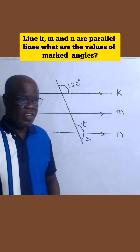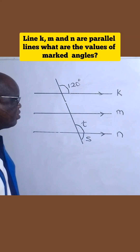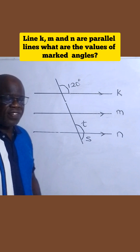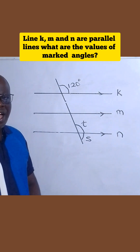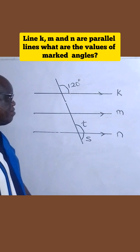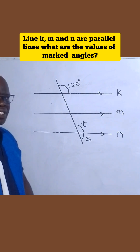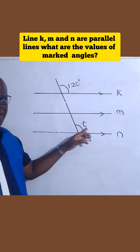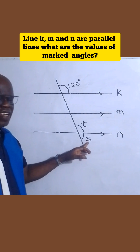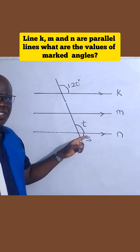Hello viewers. We have a very simple question here. The question says that K, M, N are parallel lines. What is the value of the marked angle? This is a marked angle, and this is another marked angle. We are asked to find the value.